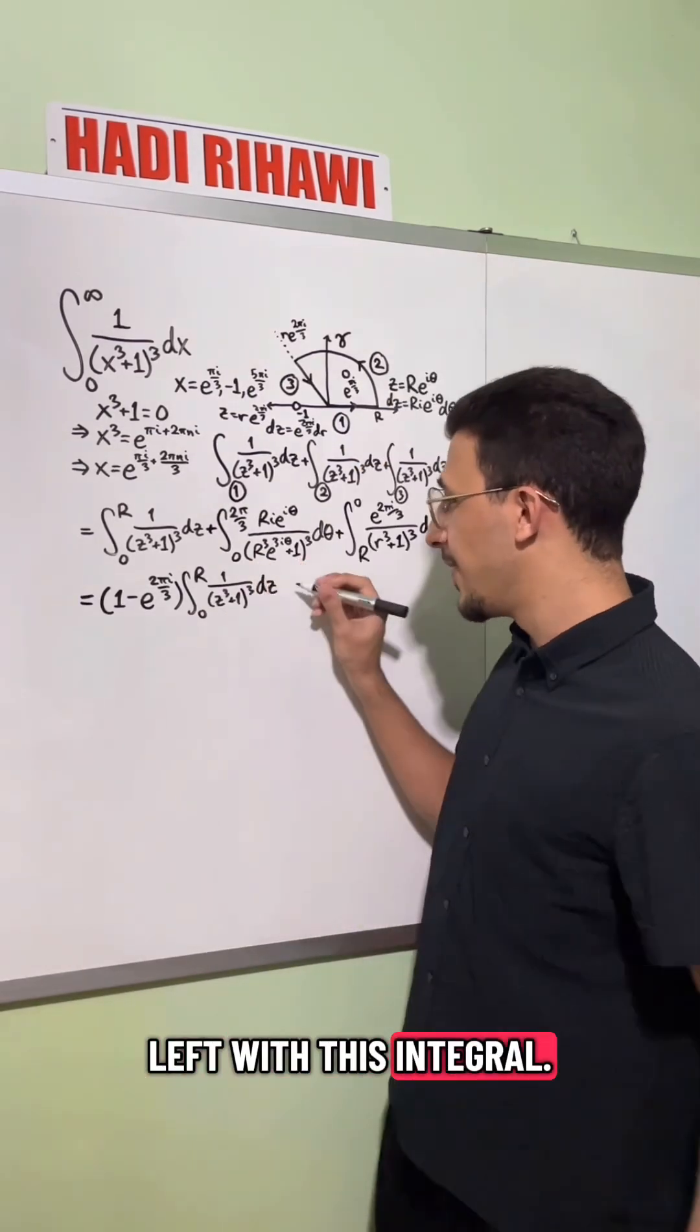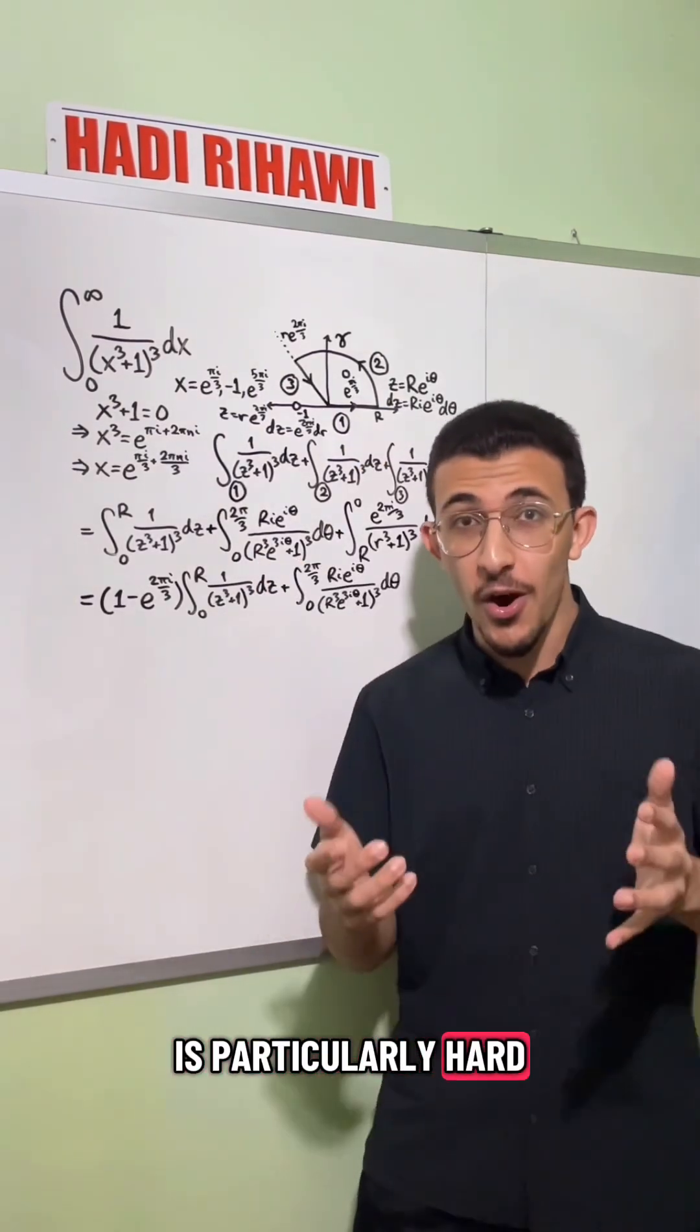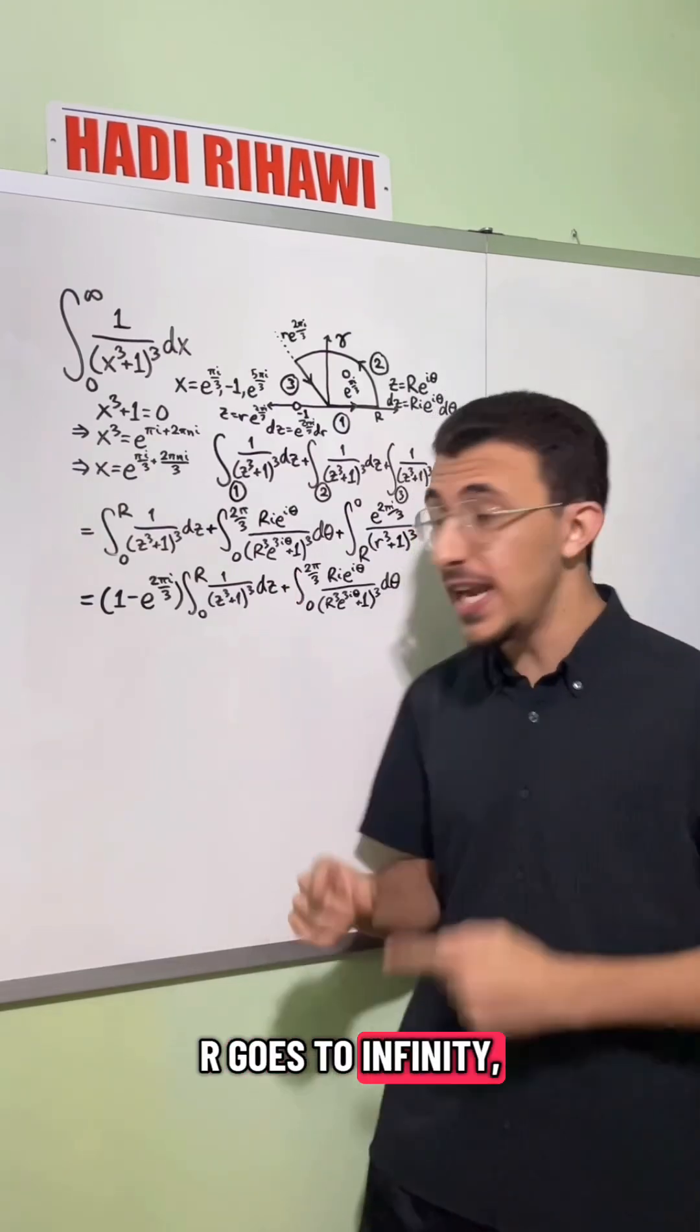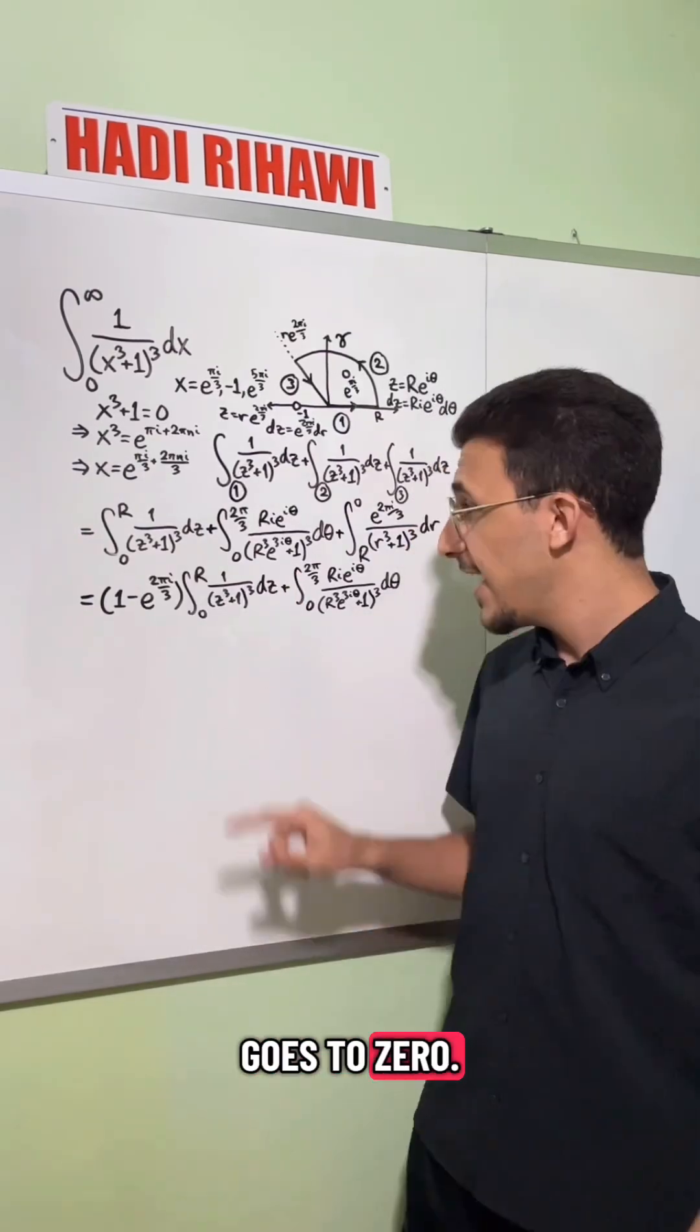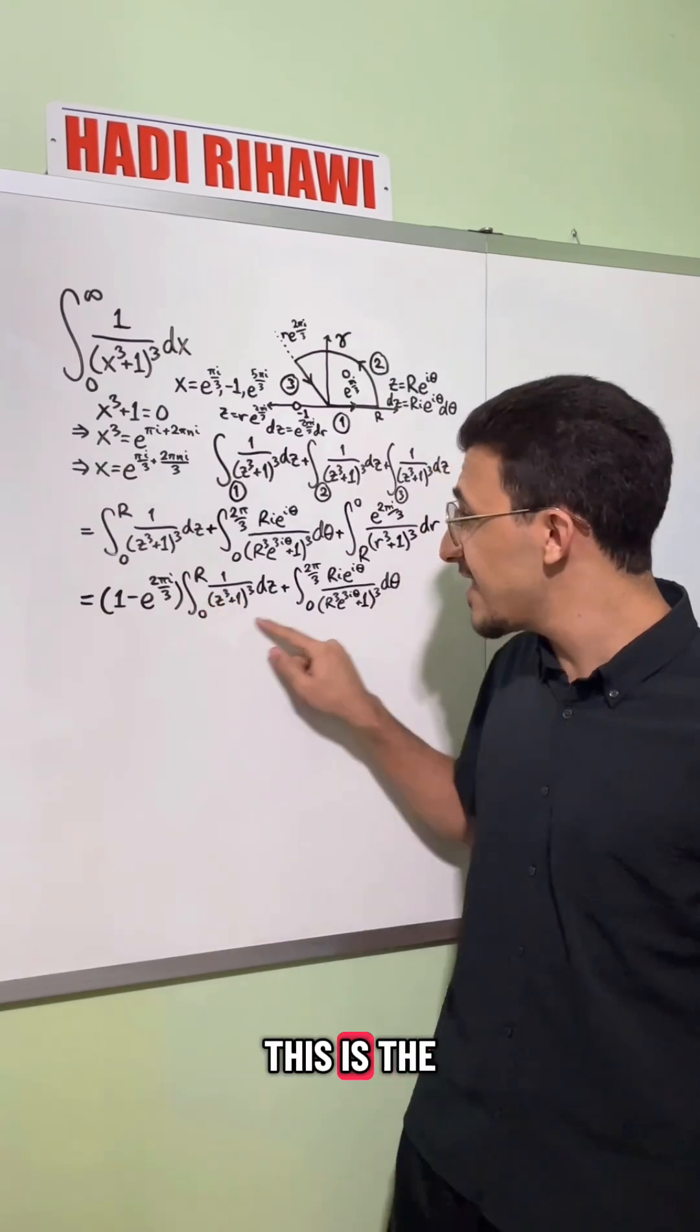And now we're left with this integral. Now this integral is particularly hard to work with, but we're going to show that as r goes to infinity, this integral actually goes to zero. And we'll see as r goes to infinity, this is the desired integral.